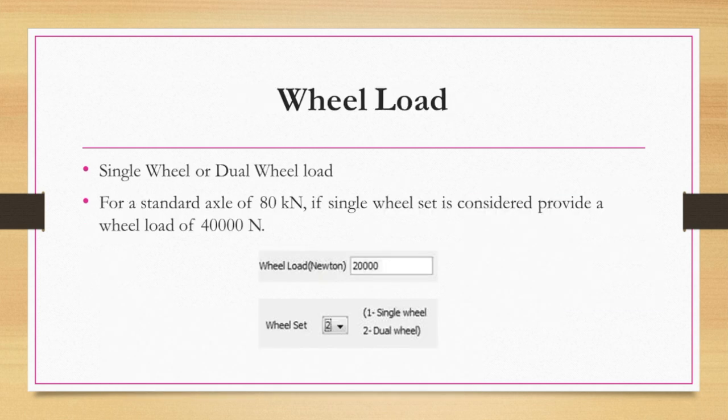Wheel load is dependent on the wheelset—whether a single wheelset or dual wheelset is being considered. Single axle with dual wheel (the standard axle load of 80 kN) means there are two wheels on either side of the axle. So considering one side of the axle, there are two wheels.